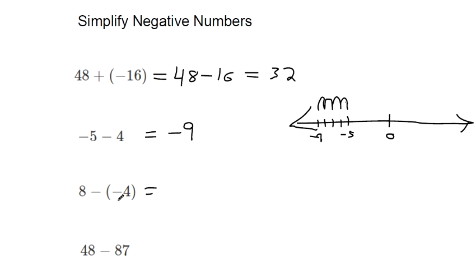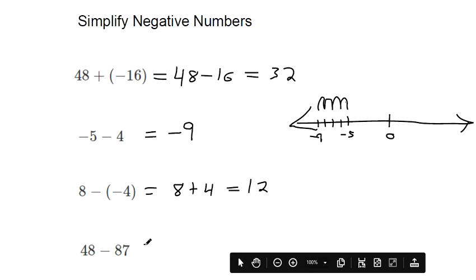So here we've got 8 minus a negative 4, so you're subtracting debt. That means you're actually increasing the amount of money you have. And then 48 subtracted by 87. Now I know my answer is going to be negative. Because I have $48, I'm trying to take away $87. So I'm not going to have enough money in the hole after that.